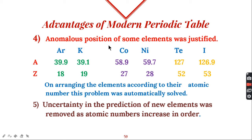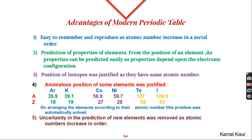The anomalous position of elements in Mendeleev's table — where elements with higher mass were placed before those with lower mass — was resolved by using atomic number. For example, argon has a higher mass than potassium but a lower atomic number. Also, prediction of new elements became more certain since atomic numbers are continuous and increase in serial order, so we know exactly how many elements can exist between two known ones.